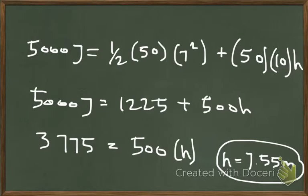I'll have 5,000 joules because the energy is the same as when it was at rest. So 5,000 joules equals one half times the mass, which is 50, times the velocity 7 squared, plus the mass again, 50, times gravity times height.